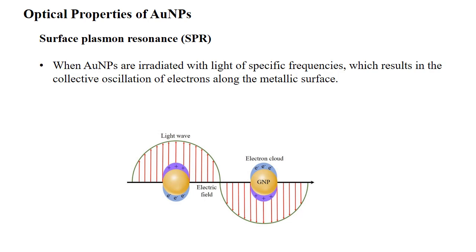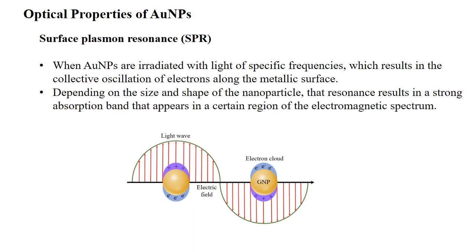In detail: light interacts with the conduction band electrons of the metal, which induces their coherent oscillation in resonance with the frequency of the incident light. The electrons oscillate and a charge separation between the free electrons and the ionic metal core occurs, making electrons oscillate back and forth on the particle surface. As a result, a dipole oscillation is created. This is the SPR effect.